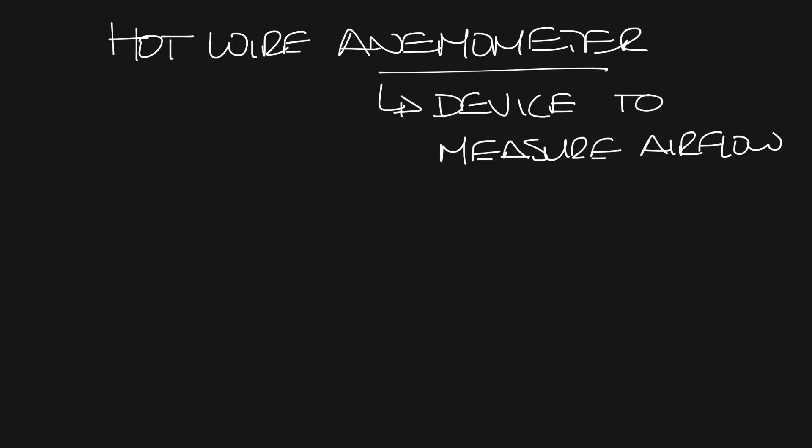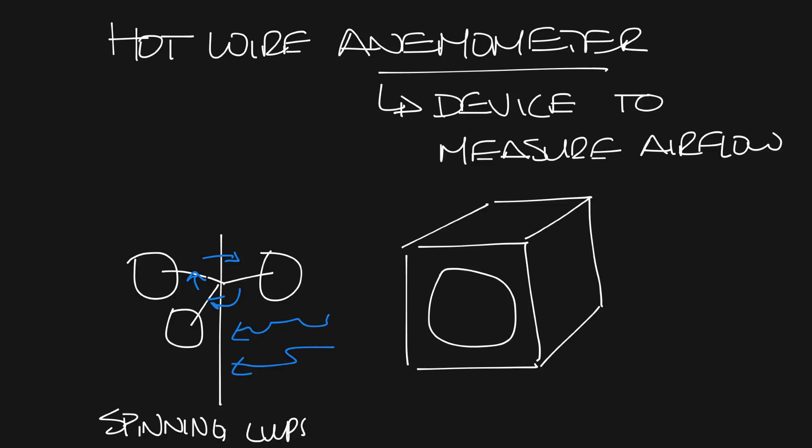Those spinning cups you see measuring wind are a type of anemometer. When the wind blows, it spins. You get the point. So are pitot tubes that you see in VAV boxes as well as cross flow sensors in the Titus VAV box.